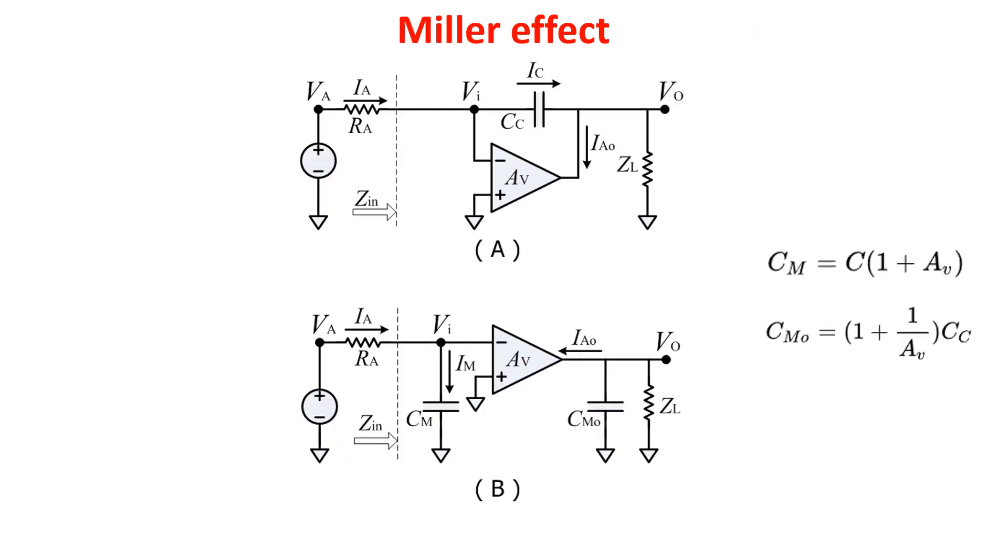So here the general rule. Above you see an inverting amplifier with a capacitor in the feedback, so between the input and the output of the inverting amplifier, thus detecting the input signal and the output one. Below you see the Miller approximation in which you see the input and output capacitances CM and CMO.